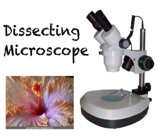Dissecting microscopes have the lowest resolution of the microscopes we're going to look at today. You need to use them to look at fairly large specimens. Here's an example of a flower. You can put the whole three-dimensional flower on the stage of the microscope, and you can get a nice close-up view.